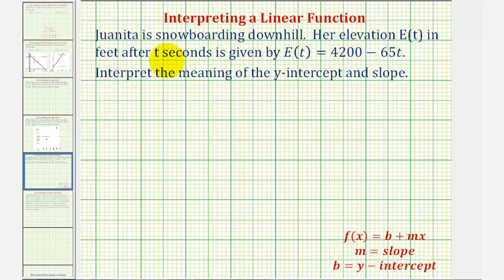Juanita is snowboarding downhill. Her elevation, E(t), in feet after t seconds is given by the linear function E(t) equals 4,200 minus 65t. We want to interpret the meaning of the y-intercept and slope for this given situation.